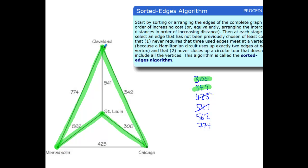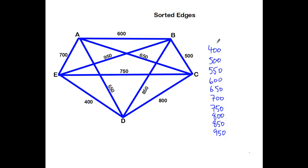With nearest neighbor, I can ask you to calculate from each starting, each vertices as your starting point. With sorted edges, there will only be one solution. Always. And again, the most time-consuming part is listing all the edges from least to greatest. So with this graph, we have our edges. I have them already sorted over here. We're going to start with the 400.